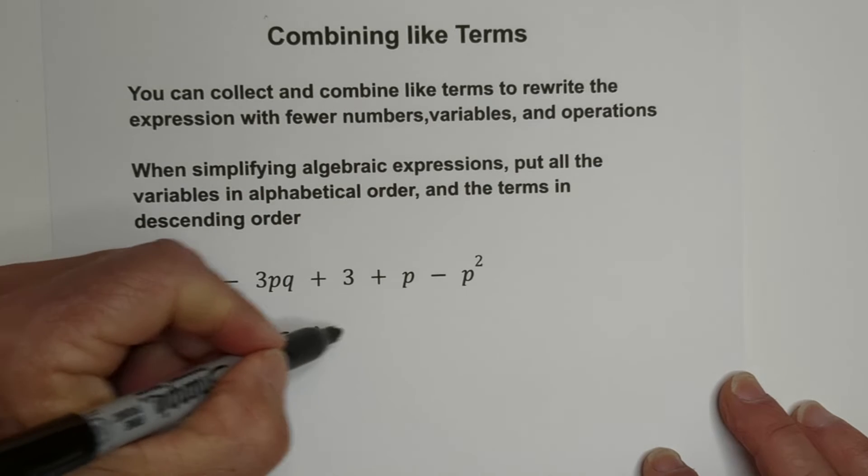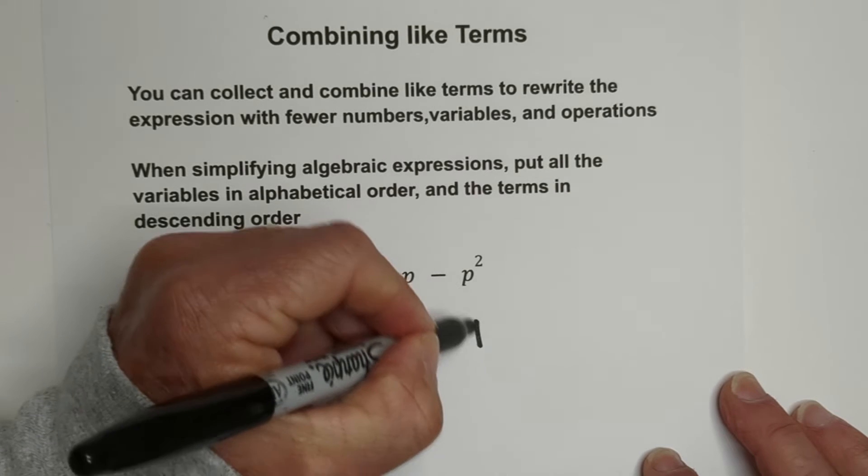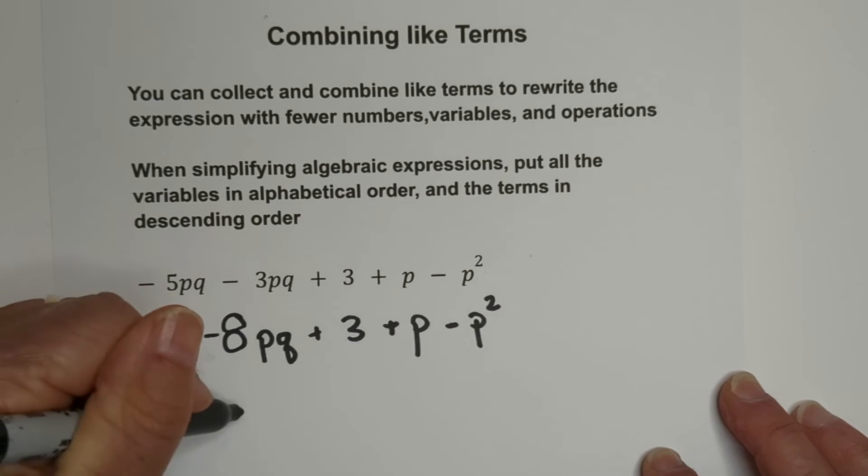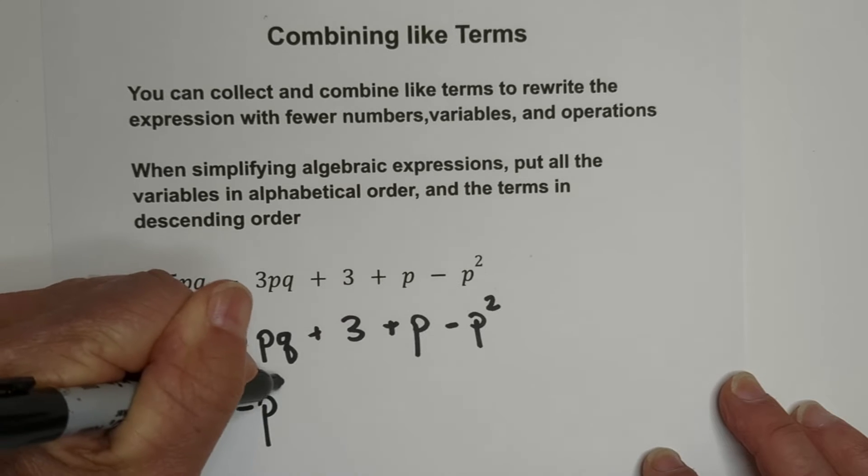Let's bring everything else down. Now there's no other like terms, so let's put it in descending order. The largest exponent, this is two, this is one, and this is one also. Here's your constant. So I'm going to go negative P squared.